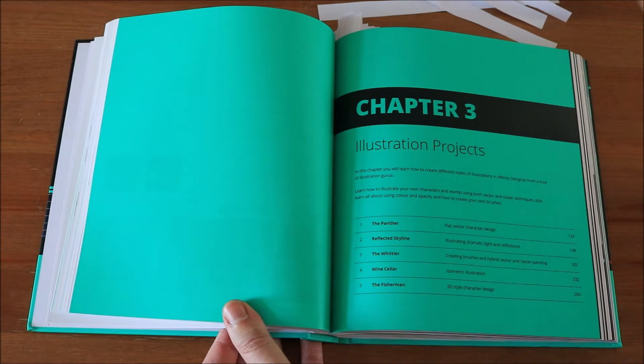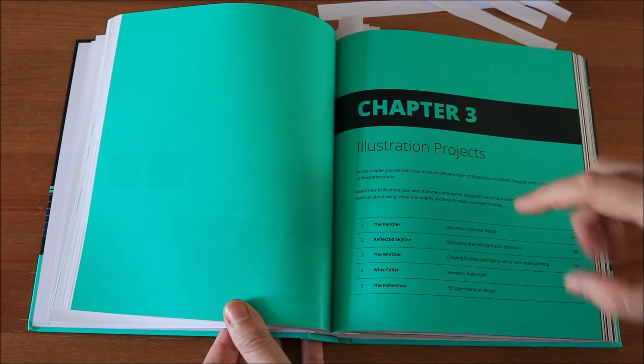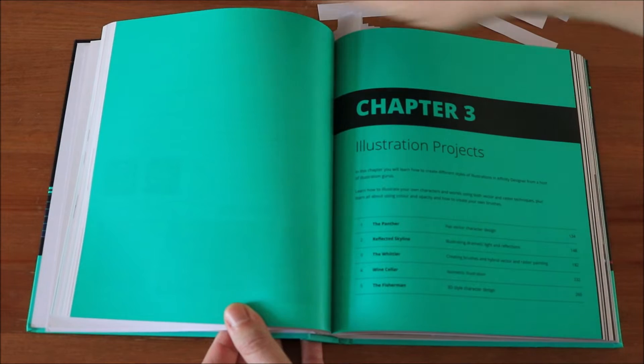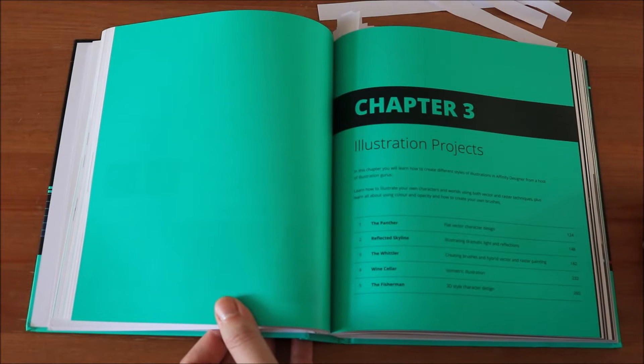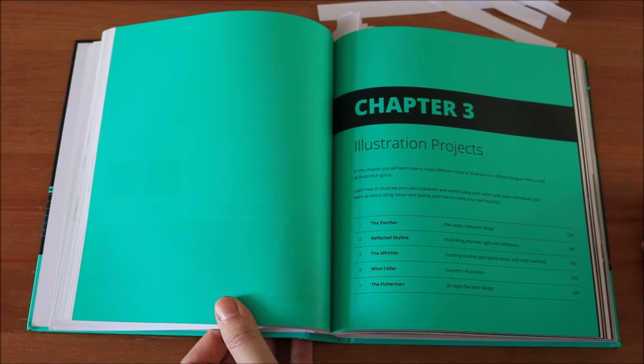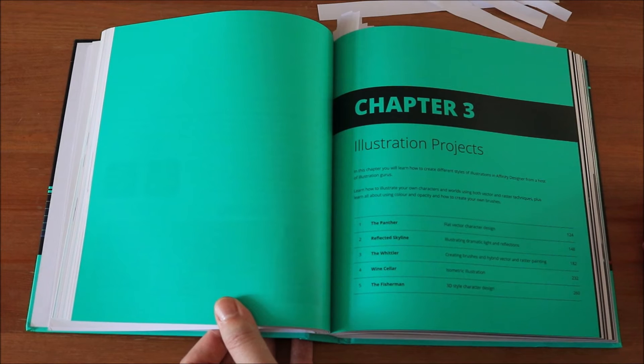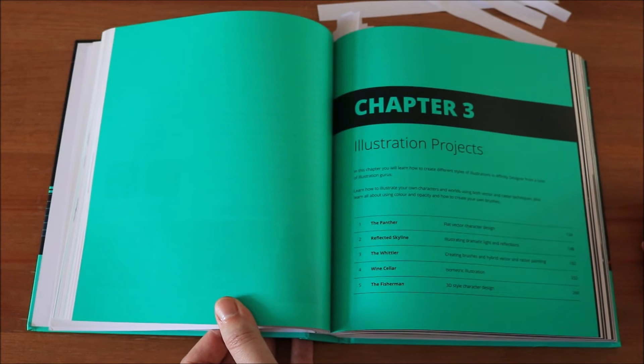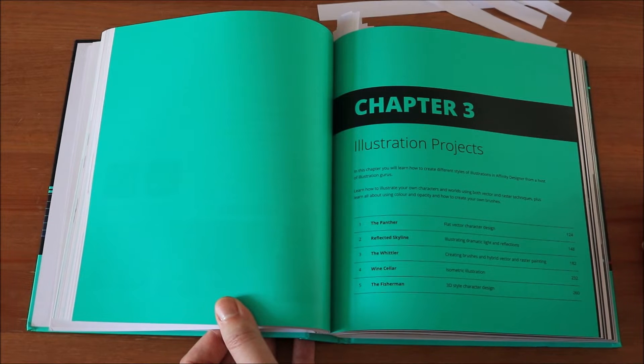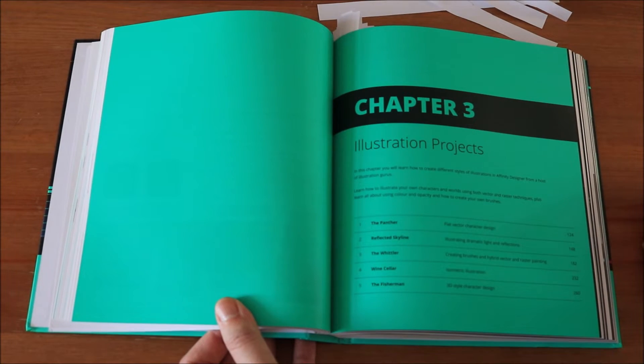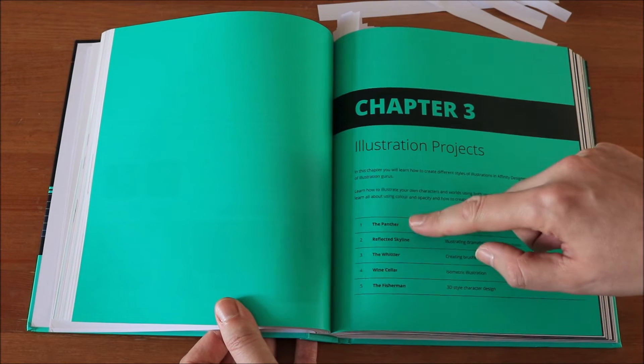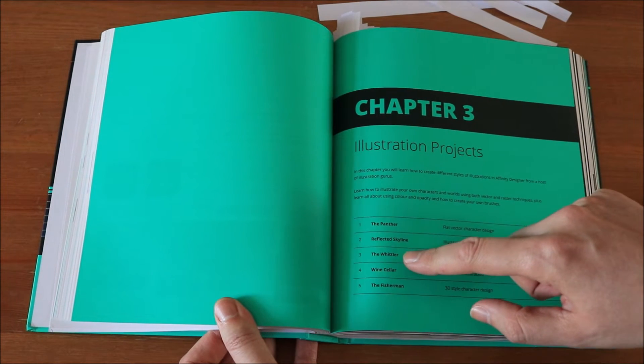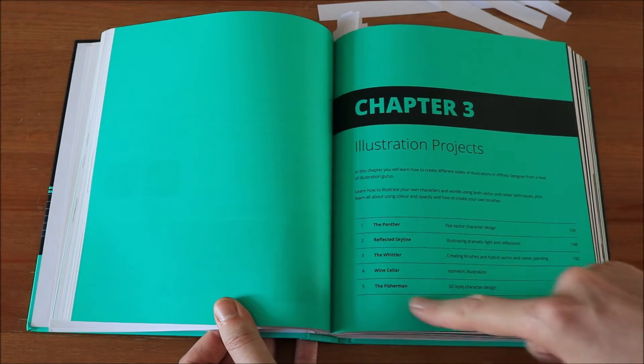Chapter 3 is, as I said, illustration projects. These are projects. These are done by really good designers. Every project in this book is really good, well designed, looks great. So it's a good example to get started and also gives you some kind of artistic guidance what to look for, which is really important because you don't only want to have the skills, you also want to know how to make it look good and how to be a good artist. So here we have five different projects. You're going to create a panther, reflected skyline, the whittler, wine cellar and the fisherman.